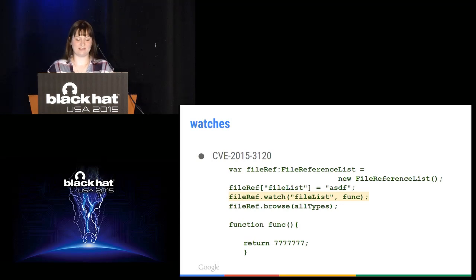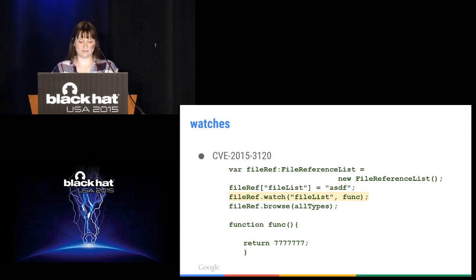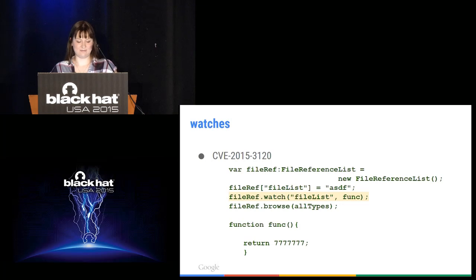This specific bug is in FileReferenceList. A subtlety: you can't set a watch on something that doesn't exist, so I have to create the property fileList first, then set a watch on it. I call browse — which makes files appear on screen — and when you select a file, it tries to create the file list. But since it's already been created and has a watch on it, the watch gets called and can return something of the wrong type to the function — type confusion.